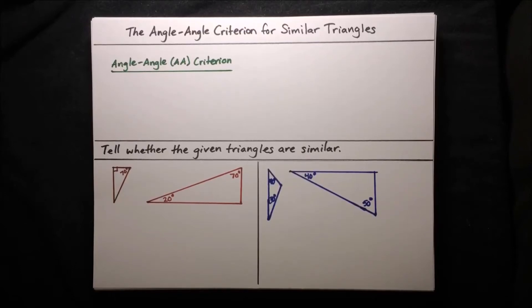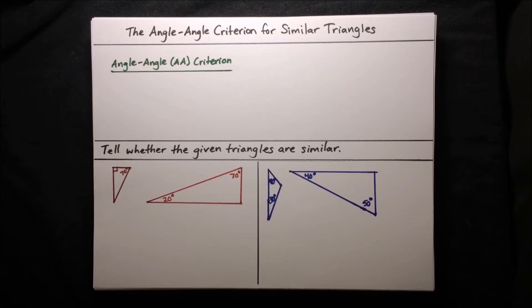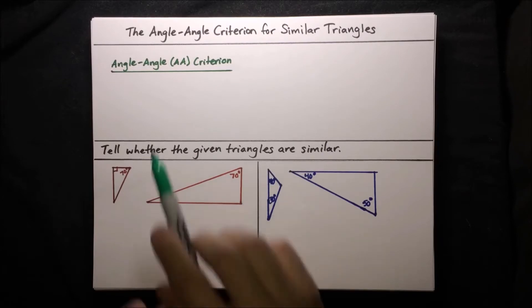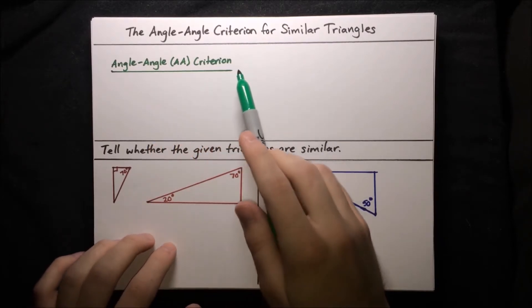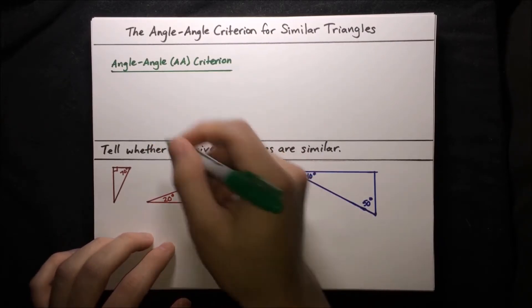In this video, we're going to talk about the angle-angle criterion for similar triangles. But first, let's start with a reminder of what it means for two triangles to be similar. We say that two triangles are similar if their corresponding angles are congruent and the lengths of corresponding sides have the same ratio. Although similar triangles have these properties, we don't actually have to check all of them. There's a much easier criterion called the angle-angle criterion that we'll explain here.